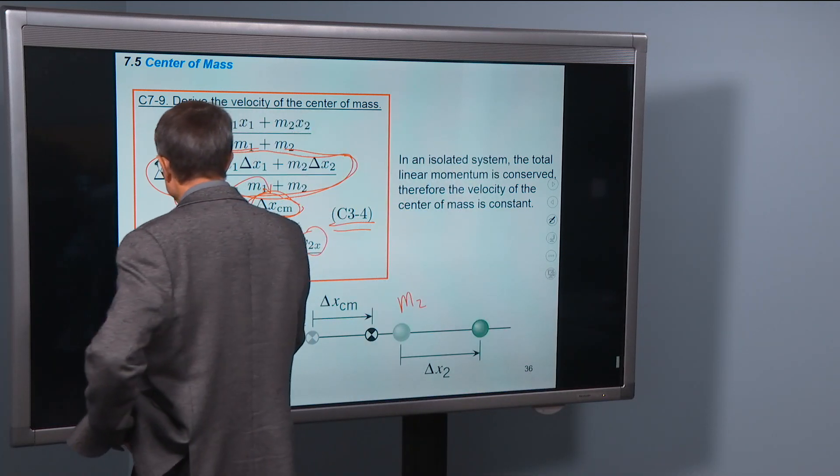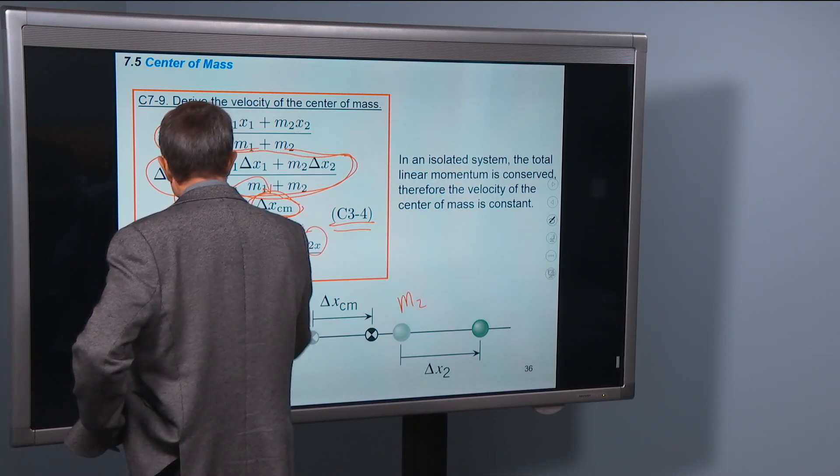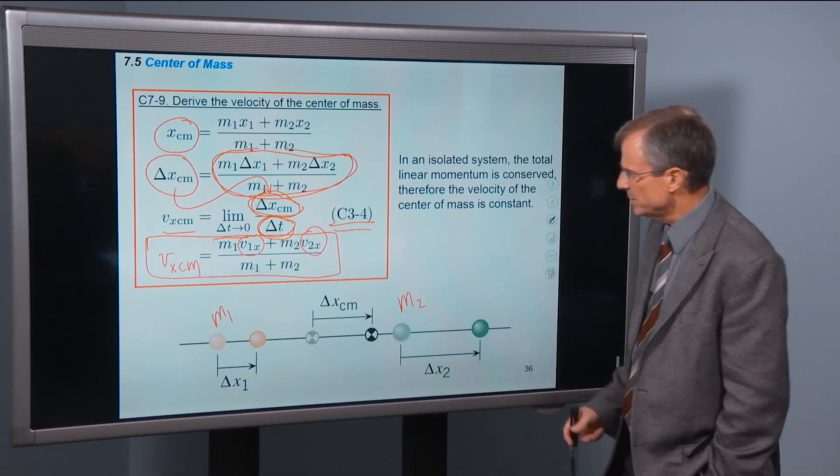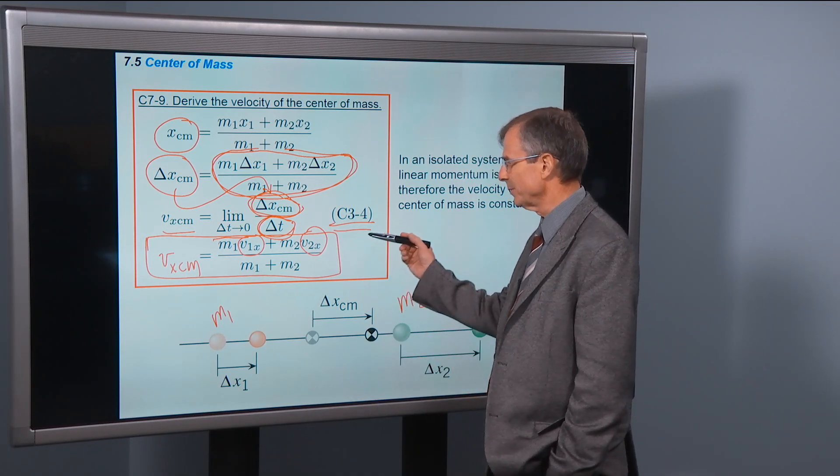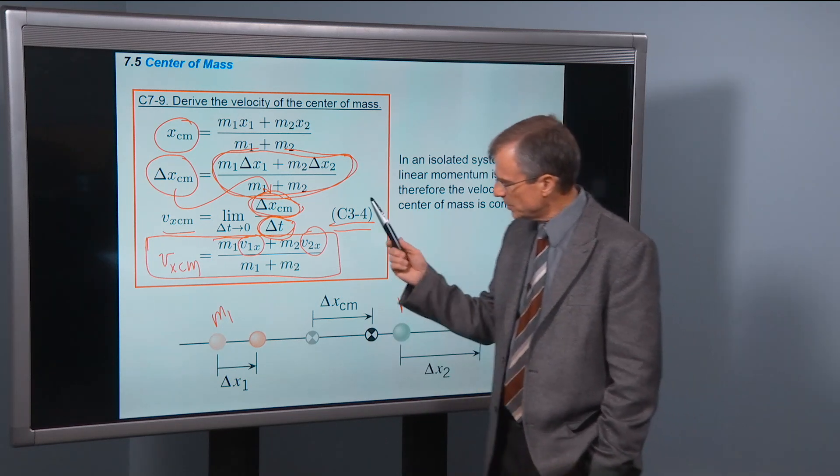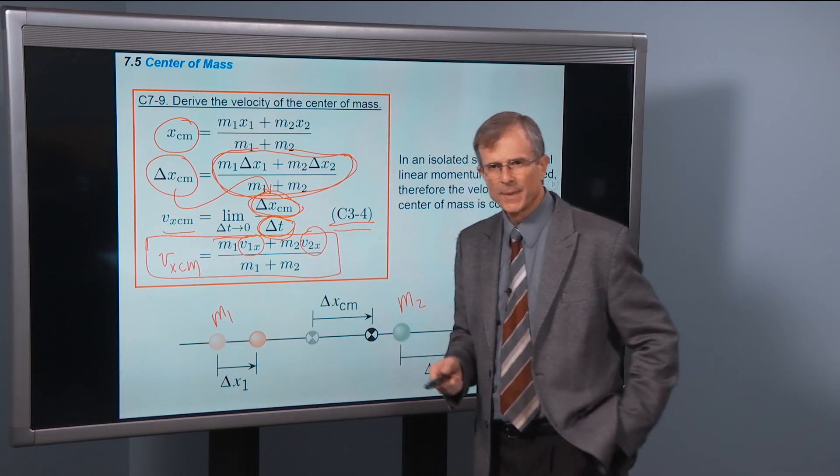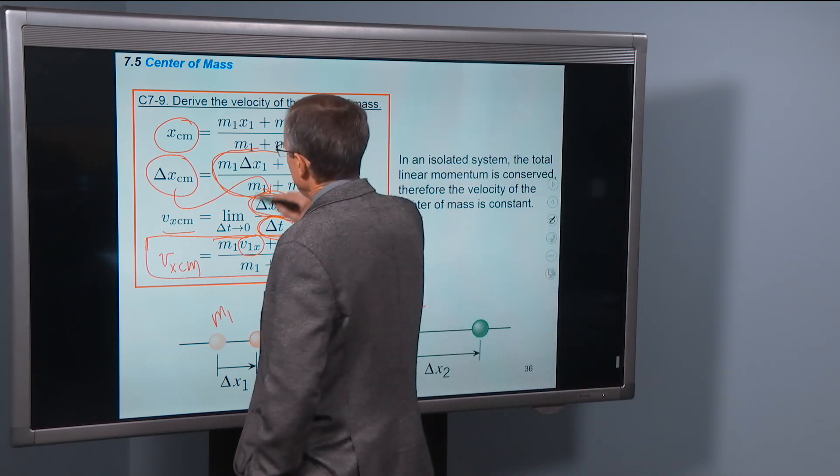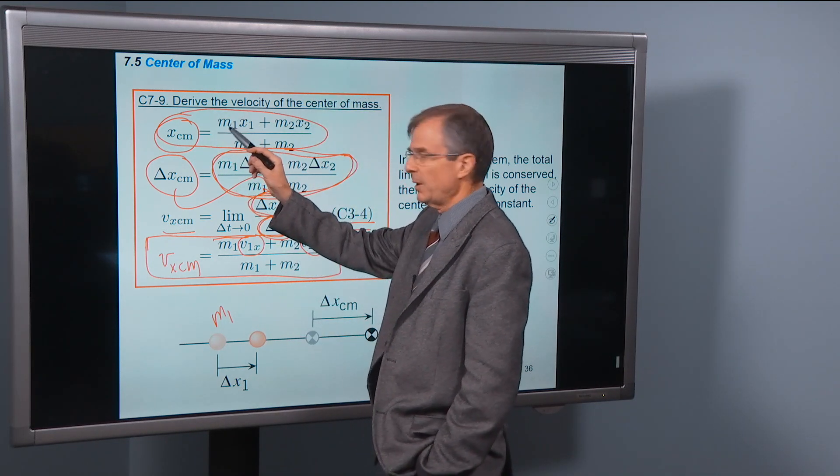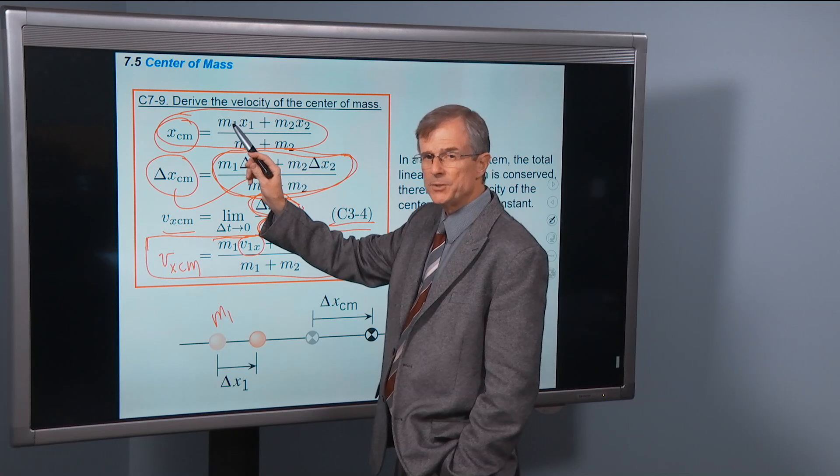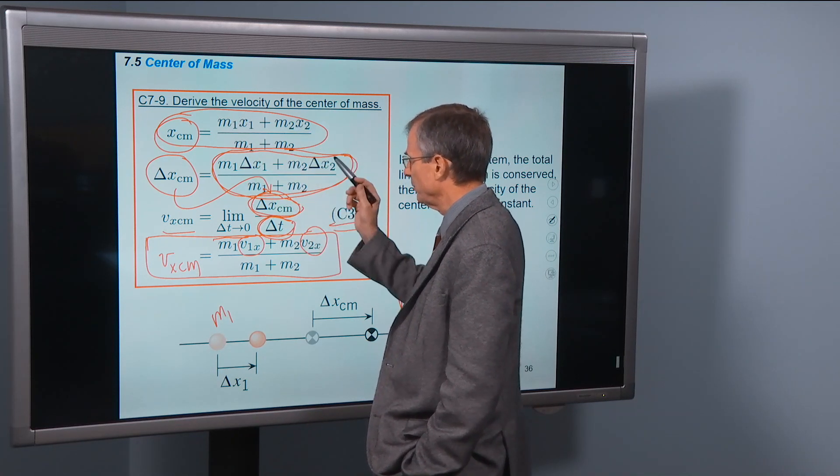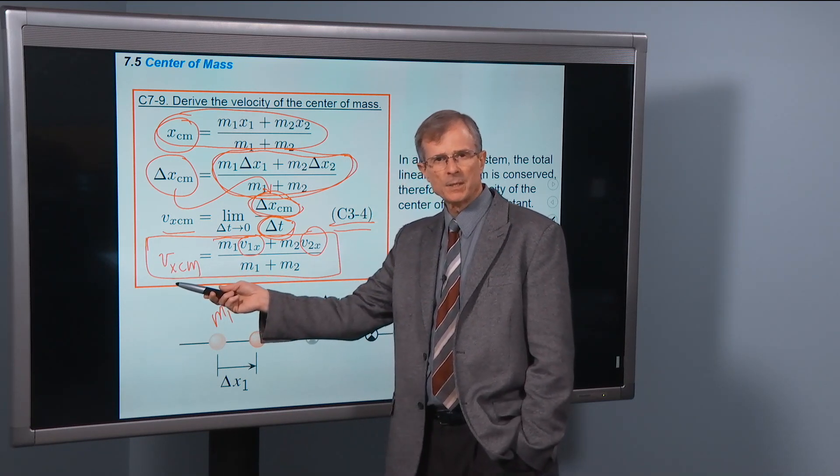So this is the formula for the velocity of the center of mass of a two-mass system. How would I extend that to three? Well, just add on m3 v3x plus m3 in the denominator. This one also has the same basic structure that this one does. If you're going to find an average value of x, you multiply it by a weighting factor of m1 times x-one plus m2 x-two over m1 plus m2.